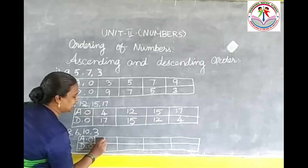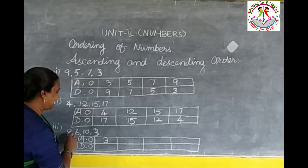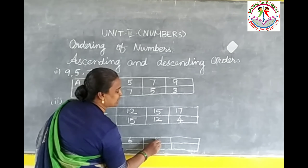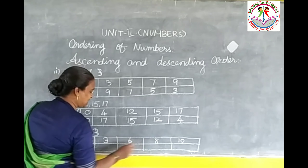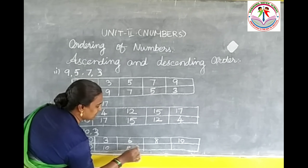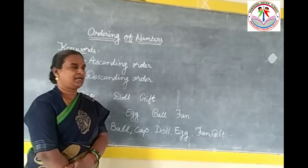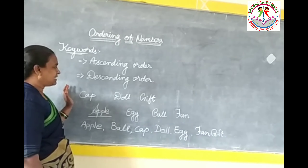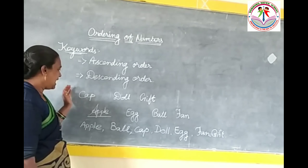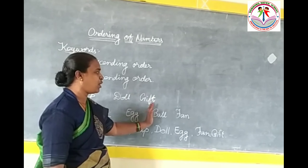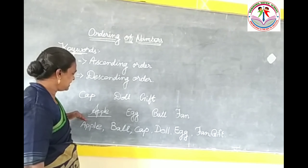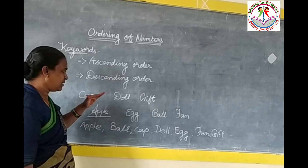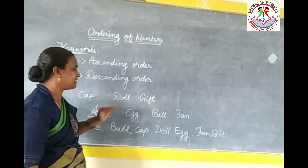Here again some numbers: 8, 6, and 3. In ascending order, 3 is the smallest. And then 8, 6, 10 — 6 is the next smallest. Then 10 is the biggest number. So the order is 3, 6, 8, 10. In descending order: 10, 8, 6, 3.